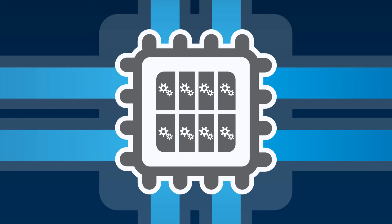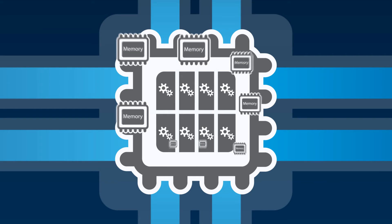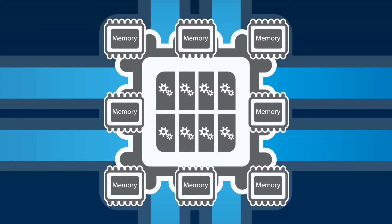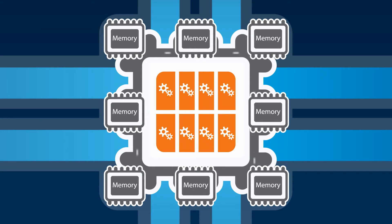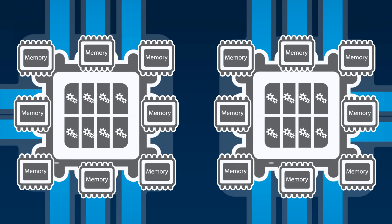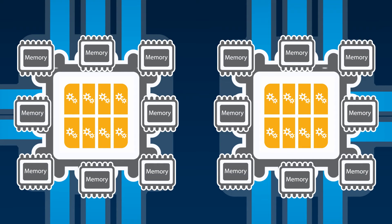Without a shared memory design, you get a complicated mess as memory blocks proliferate, and each CPU needs to update each other's CPU's memory through IPC. Multi-core parallel processing complexity gets even more challenging as you have multiple CPUs, each with multiple cores.